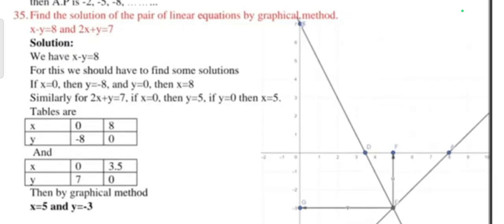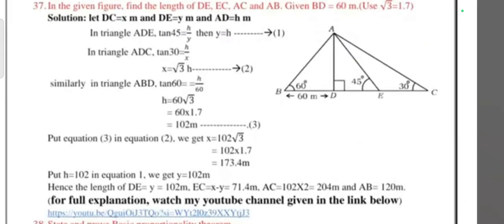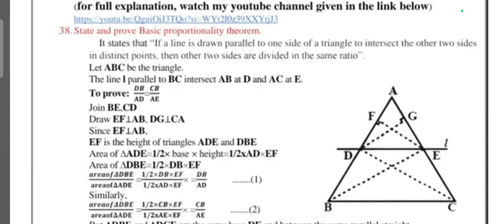Question 35: Find the solution of the pair of linear equations by graphical method. Next question: In the given figure, find the length of DE, EC, and AB. Given BD = 60 cm, √3 = 1.7. Question 36: The maximum volume of a closed cylindrical tank is 6160 m³. The diameter of its circular base is 28 meters. Find the cost of painting its surface at the rate of 5 rupees per square meter. Next question: State and prove the basic proportionality theorem. This is from your textbook only.